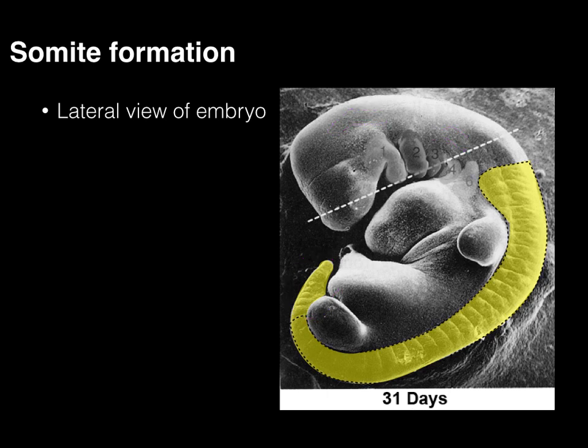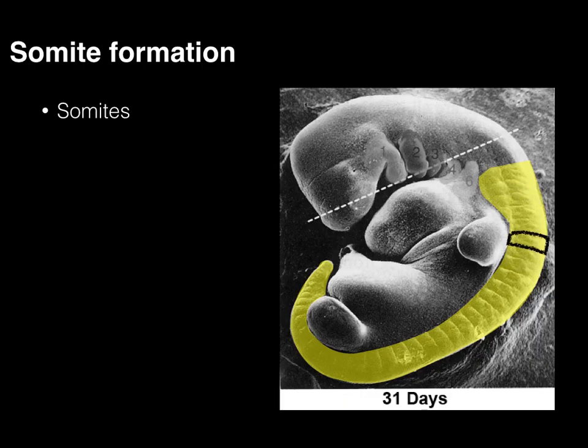We're going to focus on the somites highlighted in those dotted lines, so the eight cervical, 12 thoracic, five lumbar, and five sacral somites. And we're going to take one of those segments, take a cross-section through it, and ta-da!